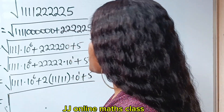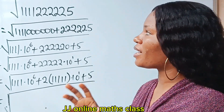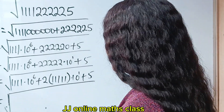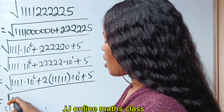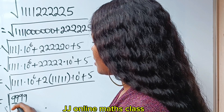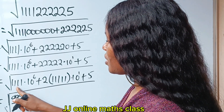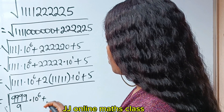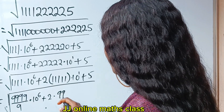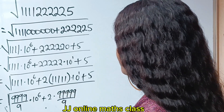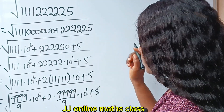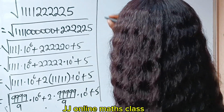We are looking for square roots, so we need to find a way to manipulate this to get a simpler number to find each square root. This can be written as 9999 divided by 9 — dividing by 9 gives us this back — multiplied by 10 to the power of 6, plus 2 multiplied by 99999 divided by 9, multiplied by 10 to the power of 1, plus 5.